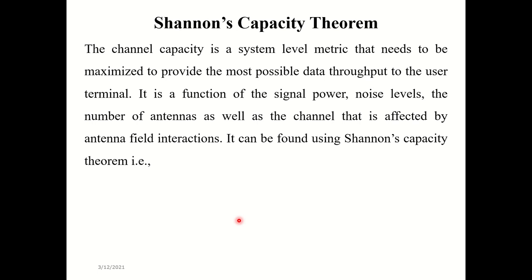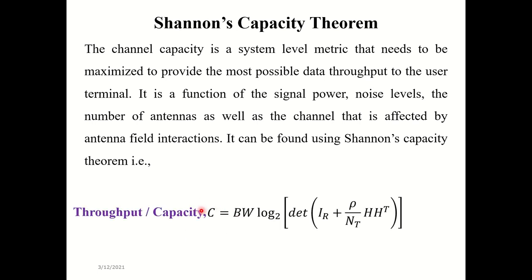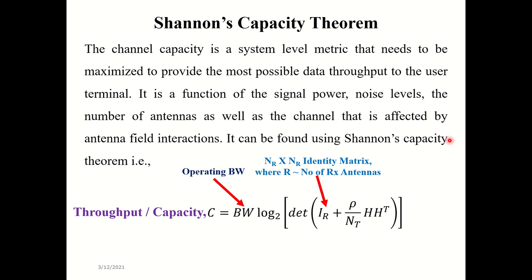Shannon's capacity theorem tells us that capacity depends on several parameters. The straightforward approach is enhancing bandwidth — with enough bandwidth you can send more data and get enhanced throughput. However, the problem is that spectrum is extremely costly. For example, Jio recently spent lakhs of crore to acquire 100 to 120 MHz of bandwidth, showing just how expensive spectrum is.